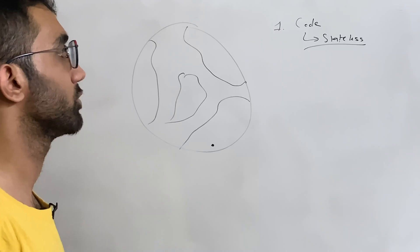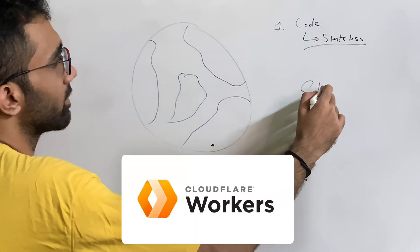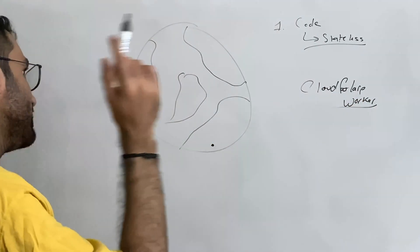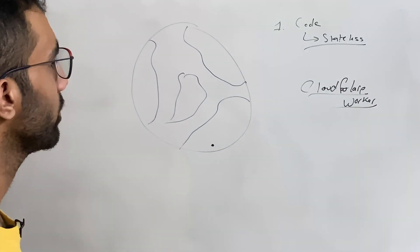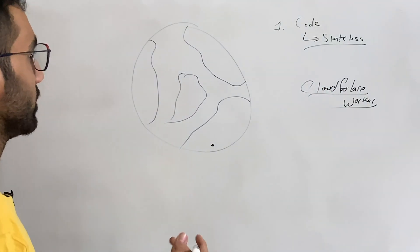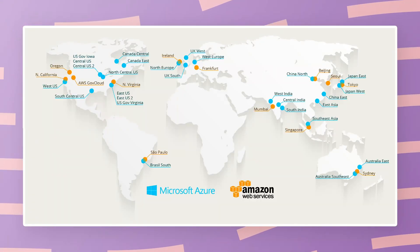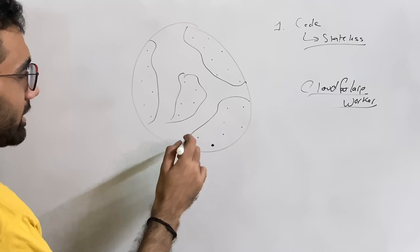If somebody visits your website again, if they connect to a different server it should not be something which should matter. Let's say your website is deployed on a Cloudflare worker. What these companies are doing—Cloudflare, AWS, huge companies—what they are doing is two things. The first thing is that they're setting up a lot of data centers around the world and very close to your end users.